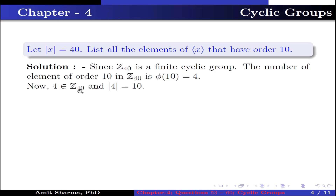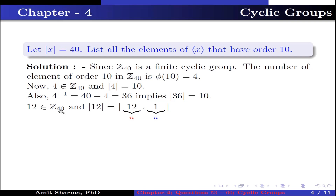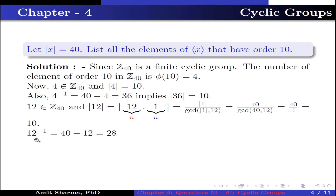Now 4 belongs to Z₄₀ and the order of 4 is 10. Also, 4 inverse is 40 minus 4, which is 36, so the order of 36 is also 10. 12 belongs to Z₄₀; the order of 12 equals the order of 1 divided by gcd(order of 1, 12), which is 40/4, equal to 10, so the order of 12 is 10. Also, 12 inverse is 40 minus 12, which is 28, so the order of 28 is 10.